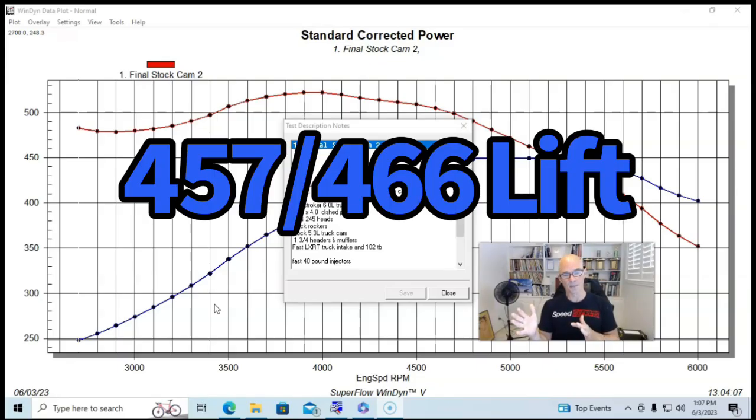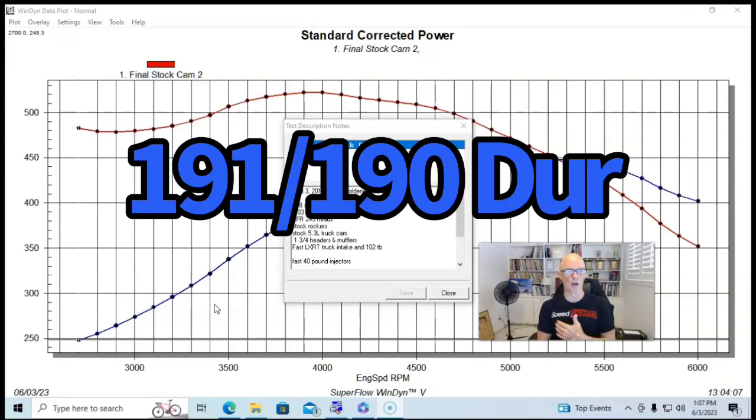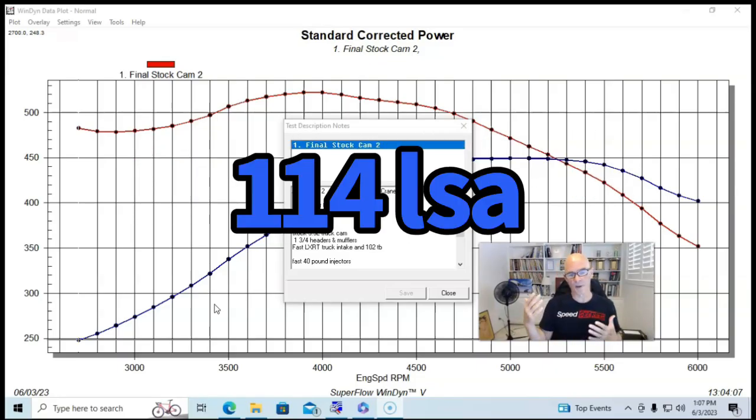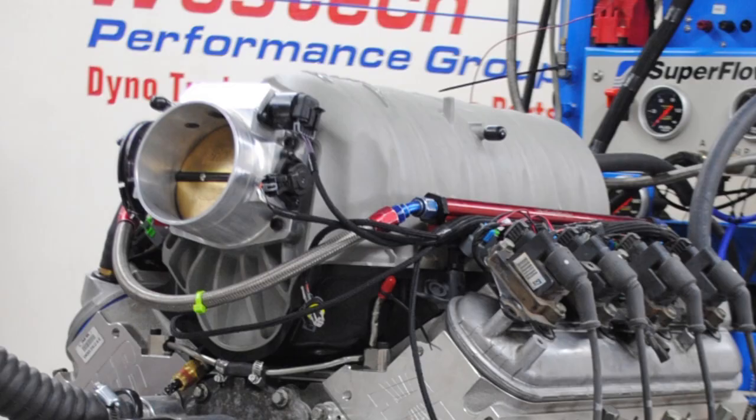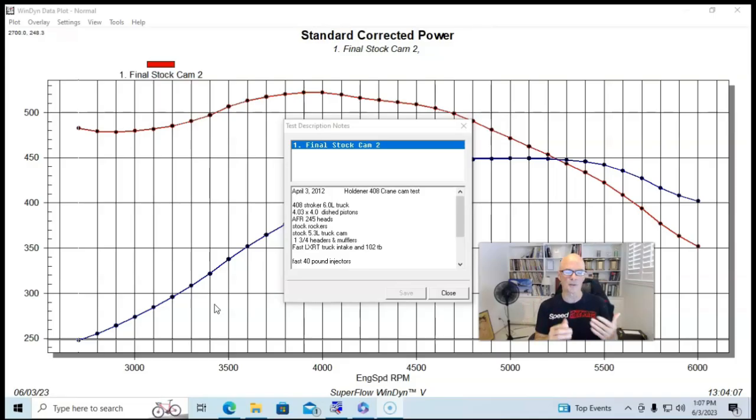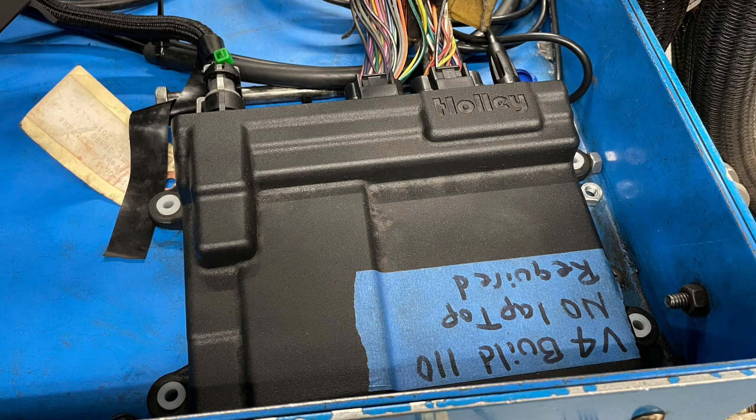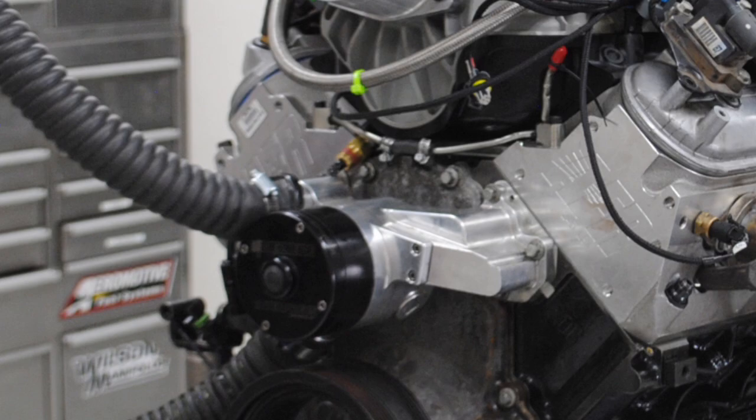We also installed a set of inch and three-quarter long tube headers, and then we started off with a Fast LSXRT intake manifold. We're going to talk a little bit about maybe why I might pick something else if you were looking for low speed power on this thing. It depends on where you're looking for that power. And that will definitely come into play when we start talking about camshafts on this thing. So we had big enough injectors. We had a Holley HP management system. We had our Meziere electric water pump. We ran this thing on the dyno the way that we always do this thing.